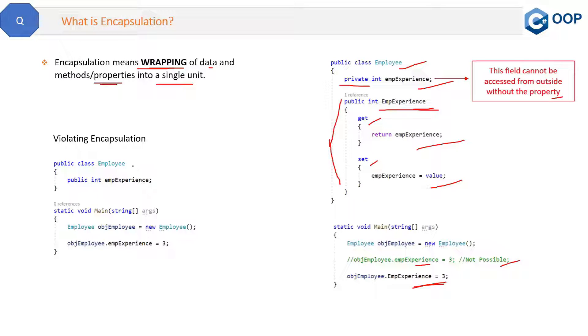For example, here we have the same Employee class, and inside here we have this public field. See, this is public so it can be accessed outside of this class, and here we do not have any property. And what we are doing in the main method? We are creating the object which is objEmployee, and then we are directly setting the value of this field. So basically we are violating encapsulation. We are not wrapping the field inside the property and then accessing it, but we are trying to directly access it.